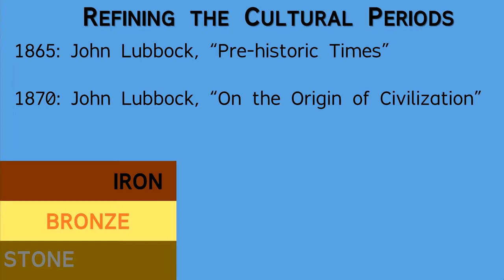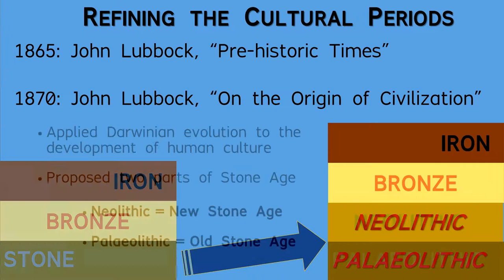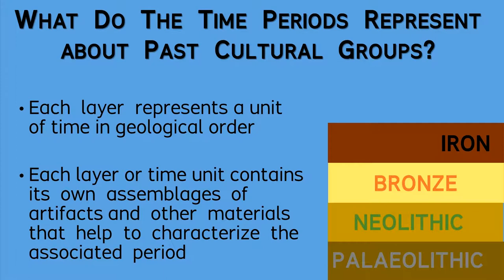Since the 1860s, a major conceptual contribution emerged from the work of John Lubbock, who looked more closely at the Stone Age and discerned more about its internal chronology. Lubbock proposed an old Stone Age or Paleolithic period of hunter-gatherers, followed later by a new Stone Age or Neolithic period of farmers. Following Lubbock's outline, other archaeologists over the years have added more detail of the material culture contents from stratigraphic layers in chronological order.